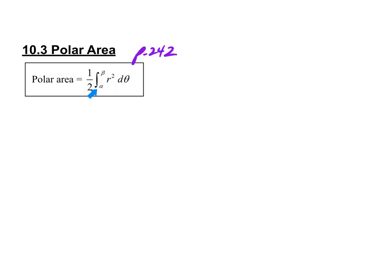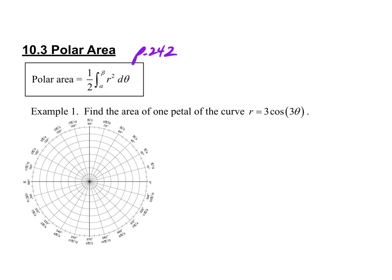You take one-half times the integral from alpha to beta — those are going to be angles, since we're integrating with respect to theta — and then the radius squared. We'll jump into some of these problems and talk about different ways to think about them. In this first example, on page 242, you're going to find the area of one petal of the curve.